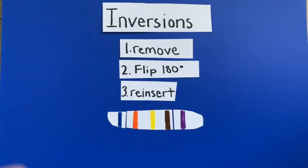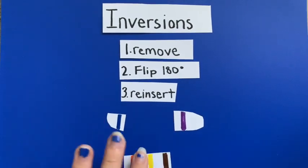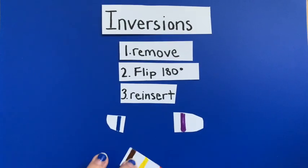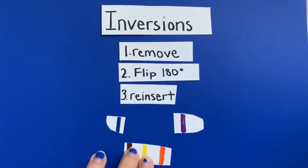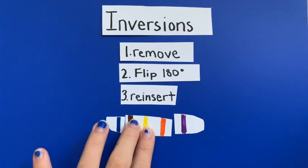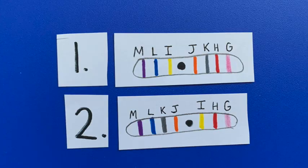Inversions occur when a segment of a chromosome is removed, turned 180 degrees, and reinserted back into the chromosome.